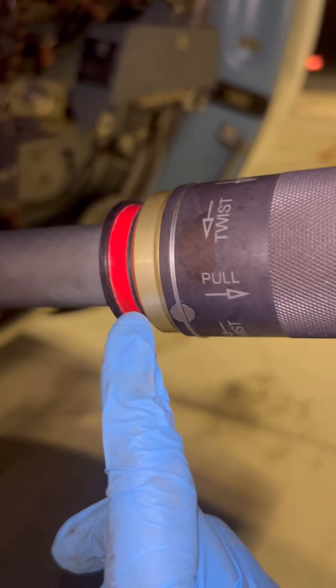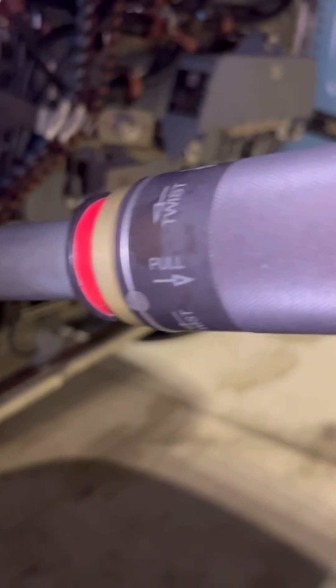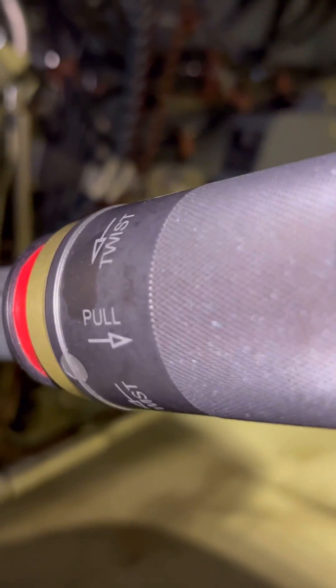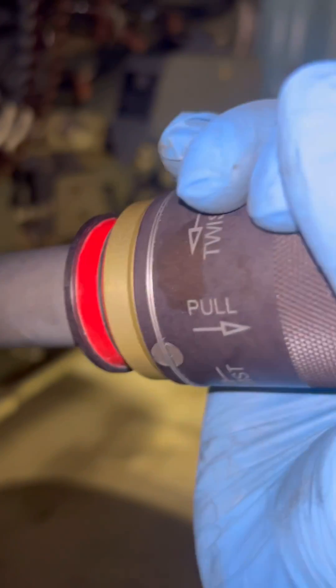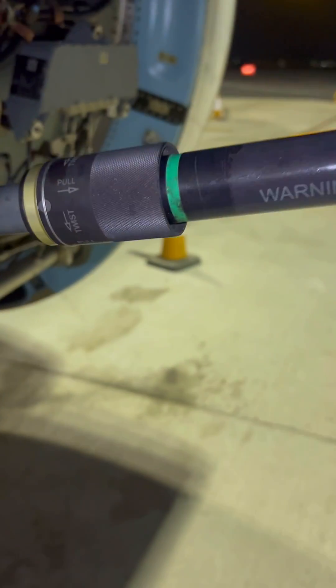There's this red indication marker that shows that the stay rod is not locked. We need to pull the fan cowl open and let it lock. When it's locked, there's a green marker to indicate our stay rod is safely locked, and yes, there's our green marker.